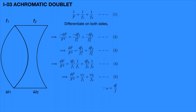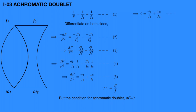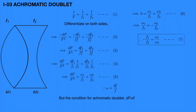We know that the condition for an achromatic doublet is dF = 0, so that a white light ray emerges as a single colored image. Putting dF = 0 in equation 5, we get: 0 = omega1/f1 + omega2/f2. Rearranging: −f1/f2 = omega1/omega2. Assume this is equation 7.